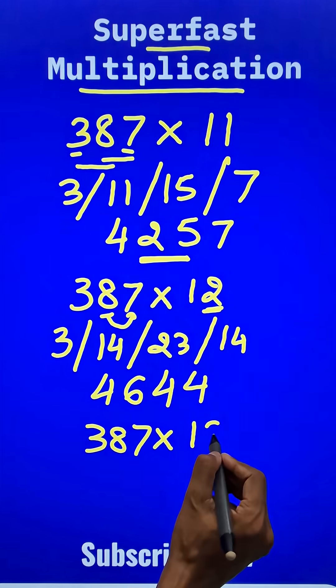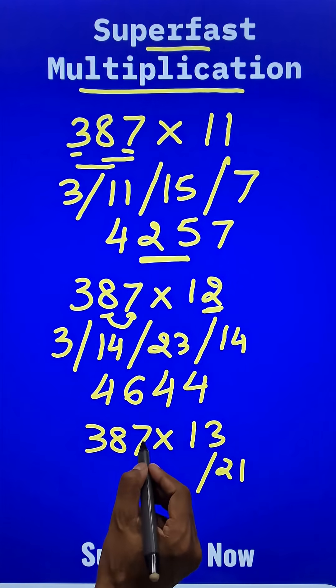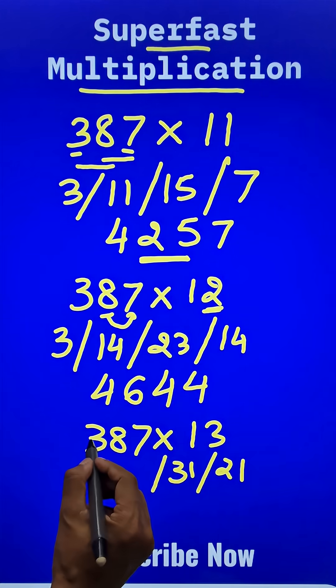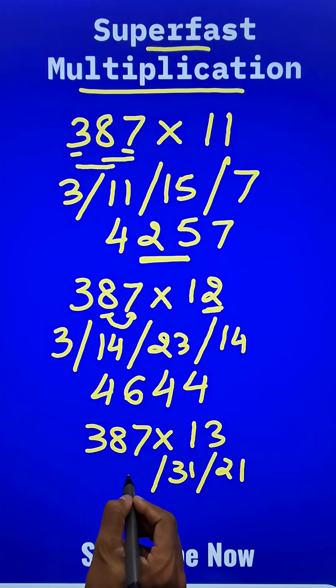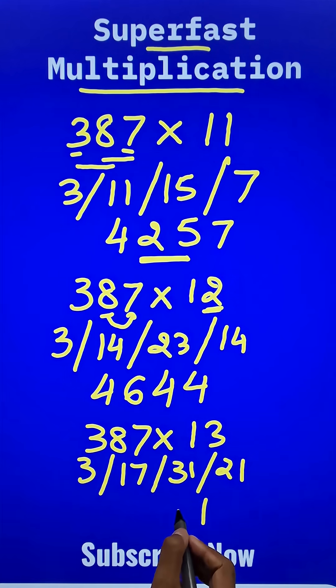Likewise, 387 times 13. Now 7 times 3 is 21. Then 8 times 3 is 24, plus 7 is 31. And then we have 3 times 3 is 9, 9 plus 8 is 17, and then finally the 3, which gives you 1. Then 2 carry, 33 means 3, 3 carry, 20 means 0, 2 carry and the 5. Now you can check your answers using the calculator. See you next time.